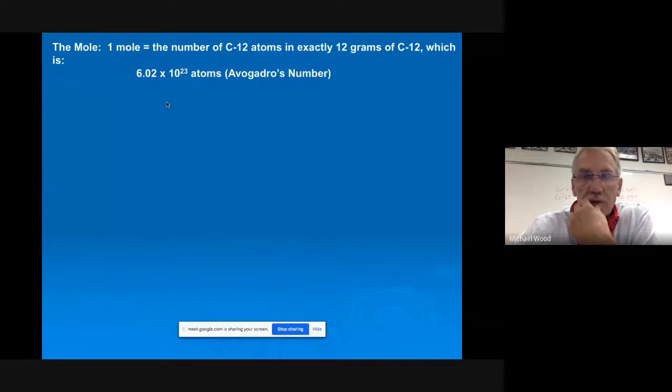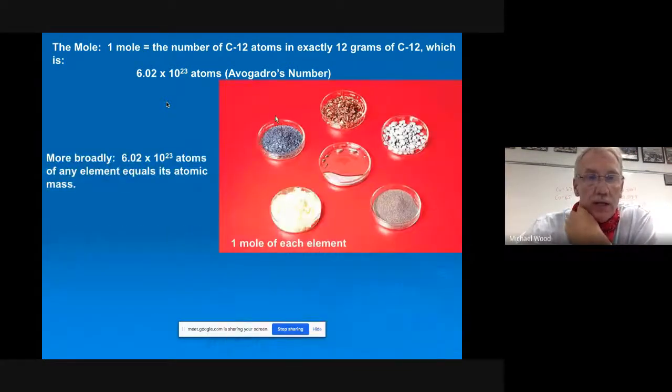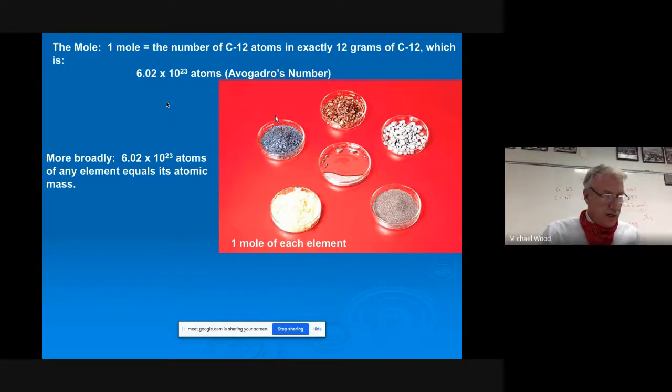And now the mole. Of course, a big thing, the mole is a big thing, and the number of carbon-12 atoms in exactly 12 grams of carbon-12, which is Avogadro's number. And more broadly, 6.02 times 10 to the 23rd atoms of any element equals its atomic mass. And so this is a picture here, then, of one mole or 6.02 times 10 to the 23rd molecules of each one of these, like copper's on top and zinc on the left. Sulfur on the bottom. It looks like maybe mercury in the middle.